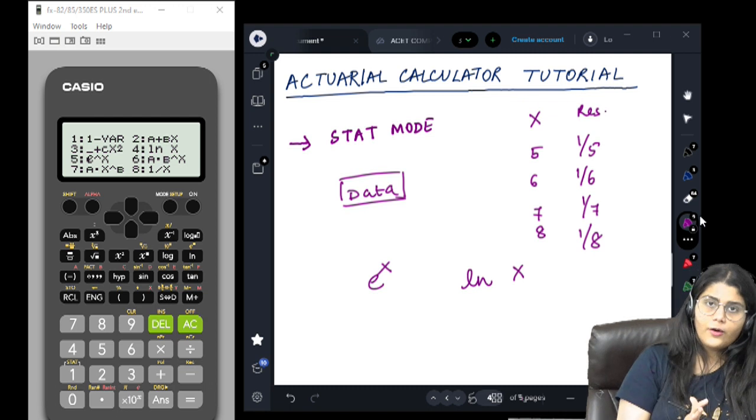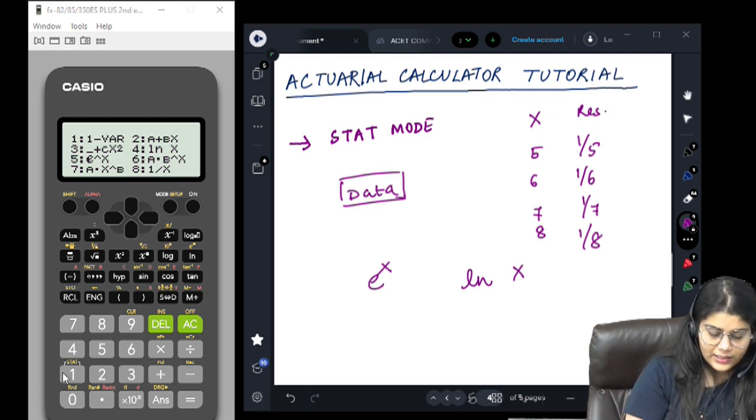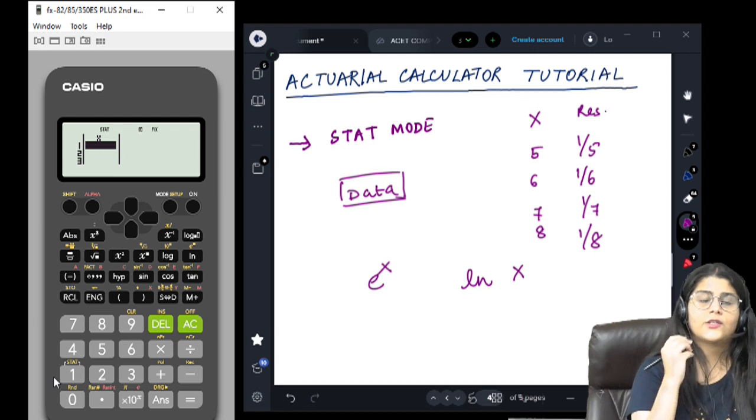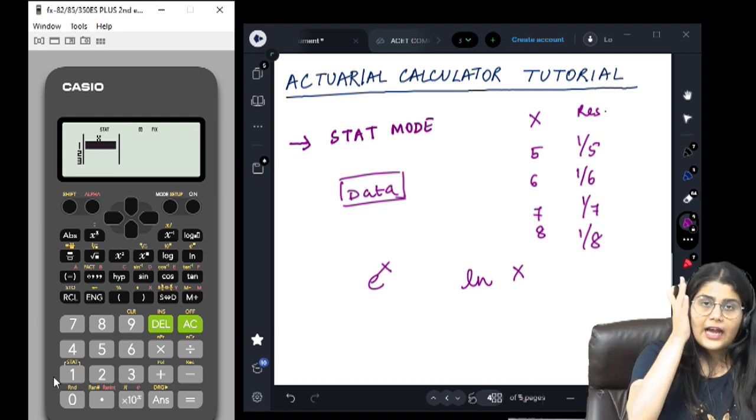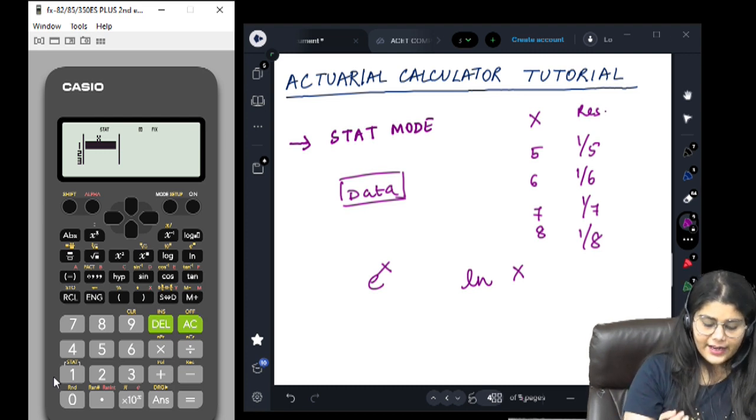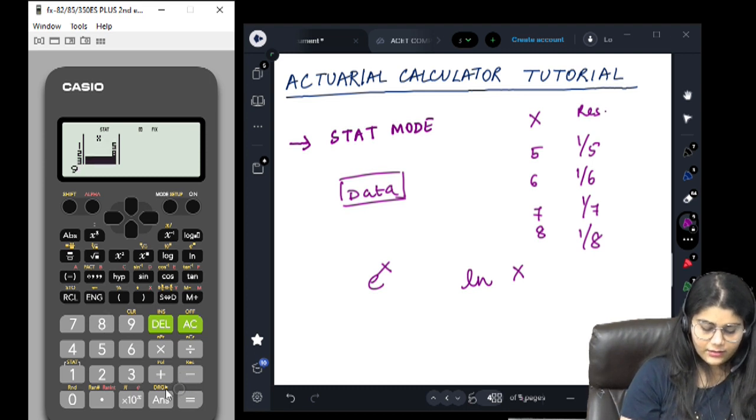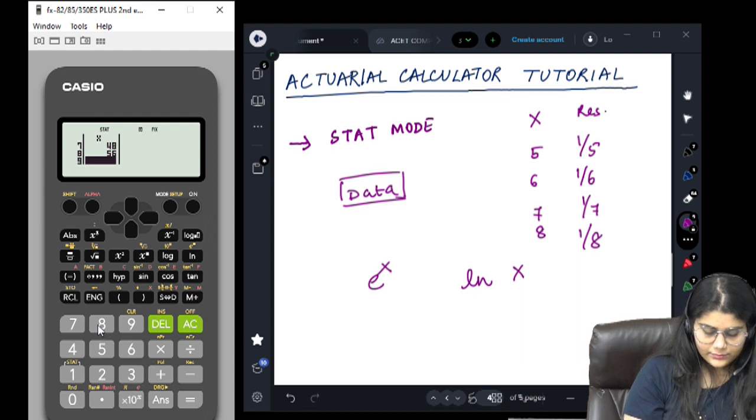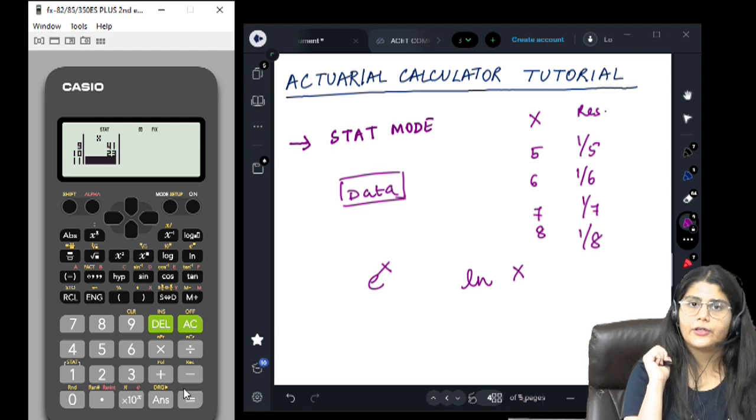For now let's do all our examples using 1 variable. As soon as you press 1 variable, you will have an option to input all your data points. So let's randomly enter 5, 8, 9, 7. Let's enter 10 data points.